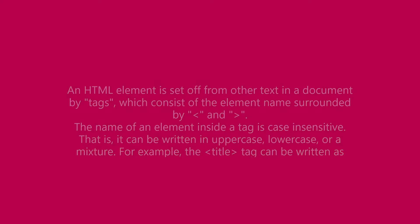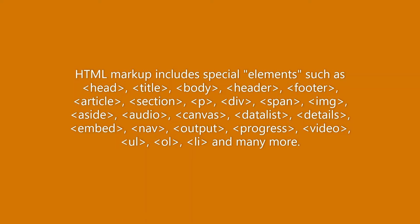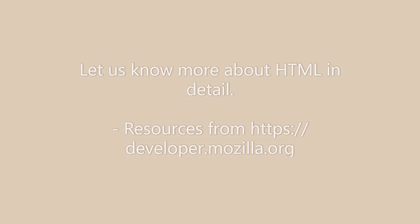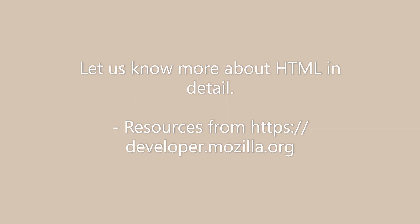HTML markup includes special elements such as: head, title, body, header, footer, article, section, paragraph (p), division (div), span, image (img), aside, audio, canvas, datalist, details, embed, navigation (nav), output, progress, video, unordered list (ul), list item (li), and many more. We will learn more about HTML in forthcoming videos. These resources are from developer.mozilla.org.